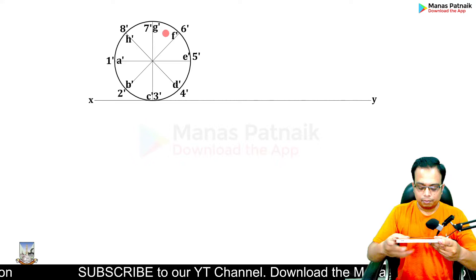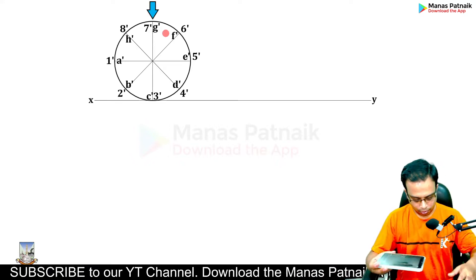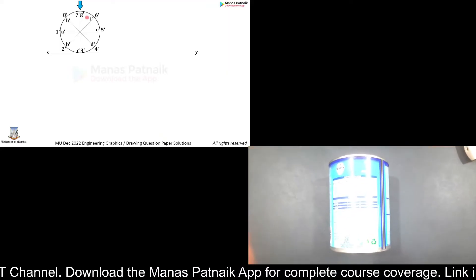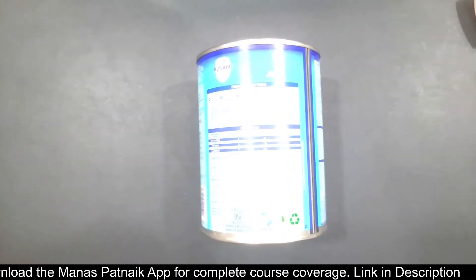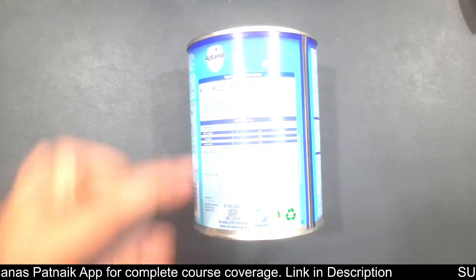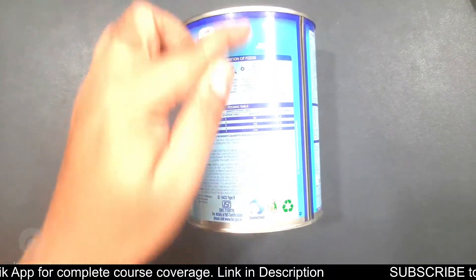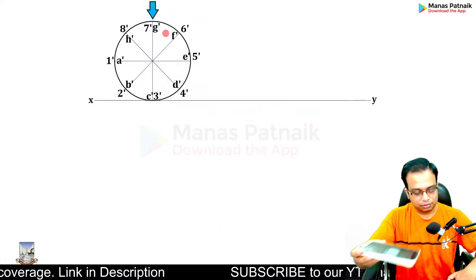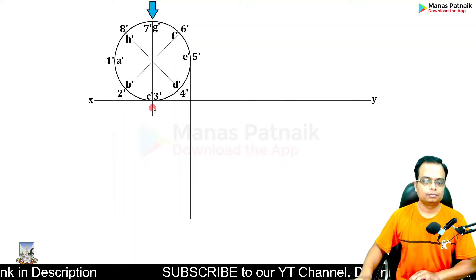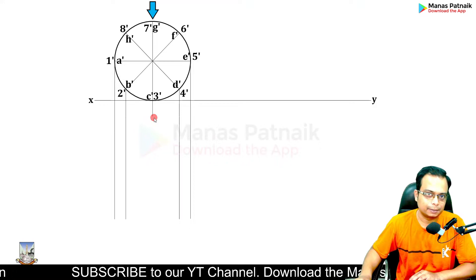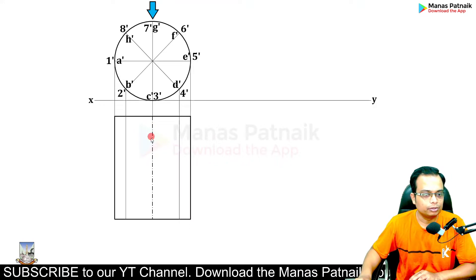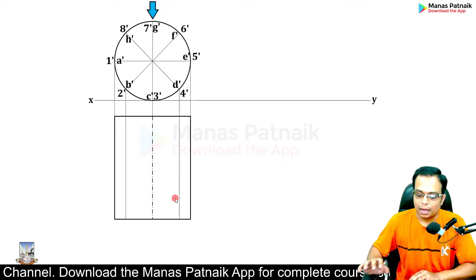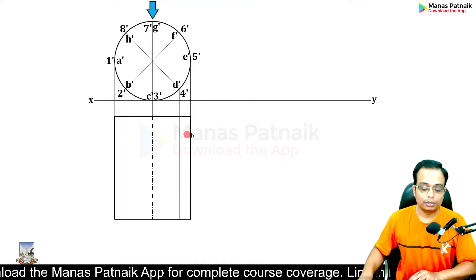When you look at the cylinder from the top, you see a simple rectangle — nothing else. This rectangle is 65 mm wide, which is the axis length. The axis is beneath it. These lines are what you call the generators of the cylinder. Step one is almost done.